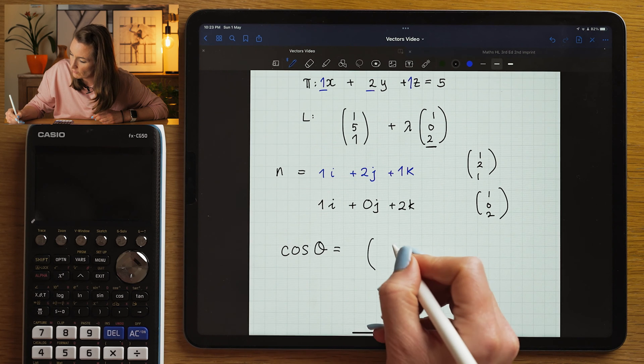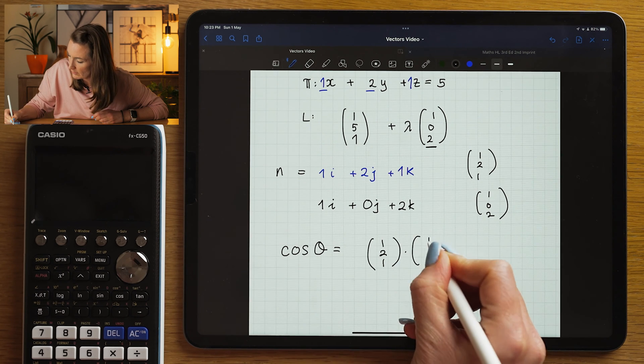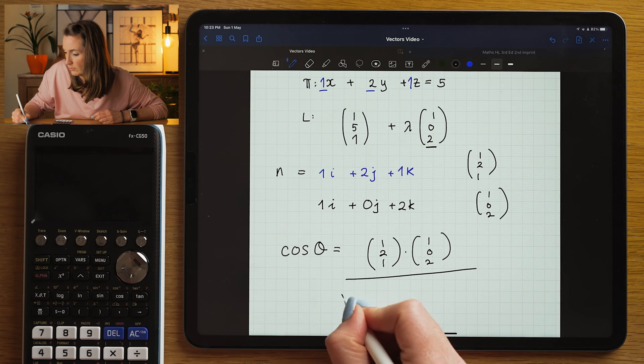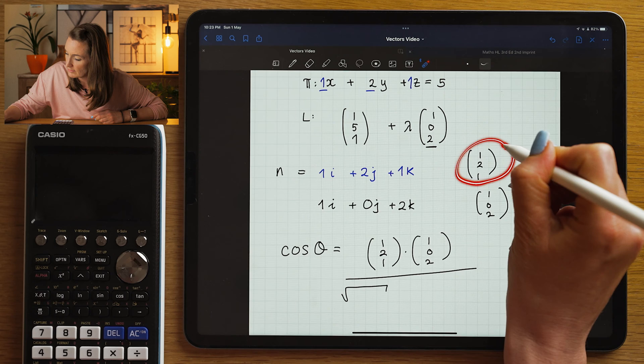So we're going to be using the formula cos theta is going to be the normal, the dot product of these two vectors, the normal and the direction vector, divided by the product of their magnitude.